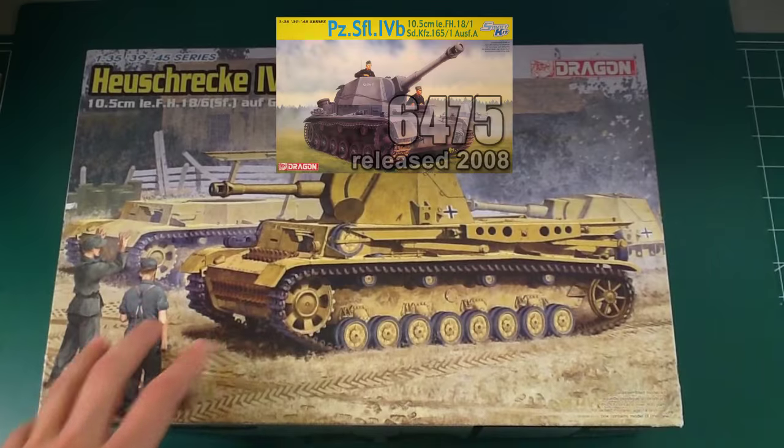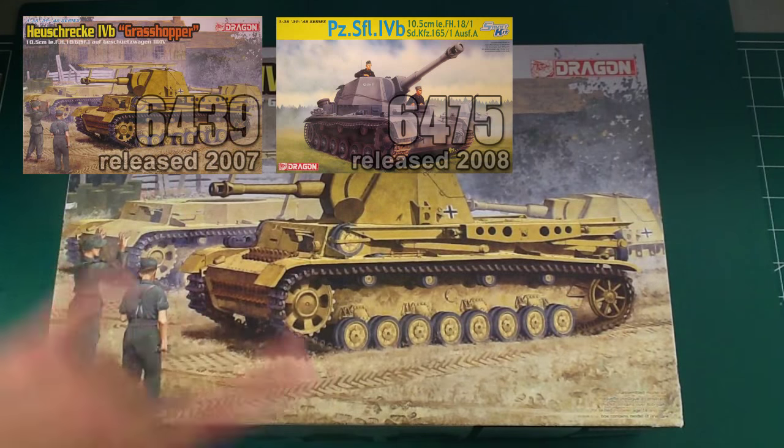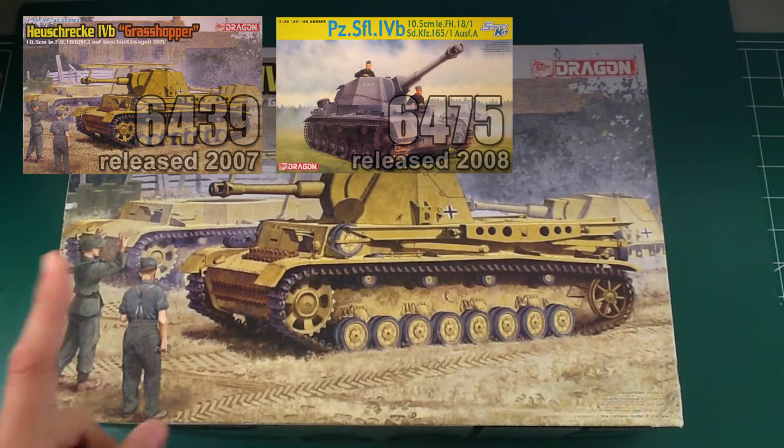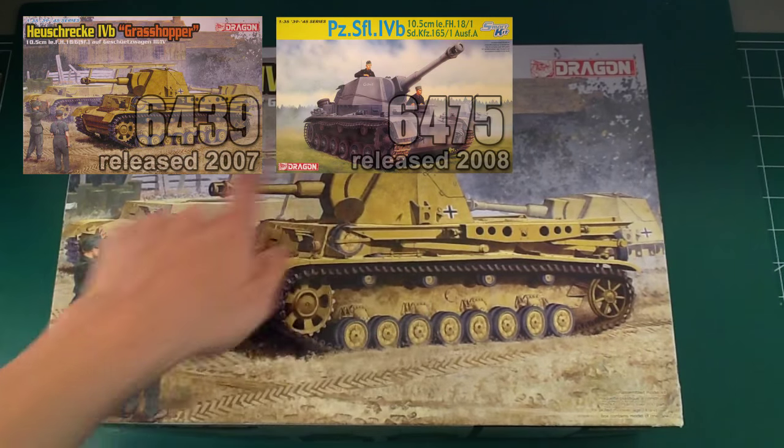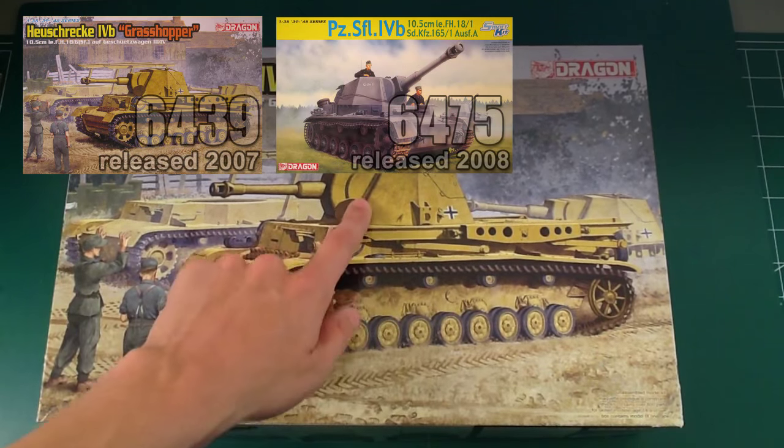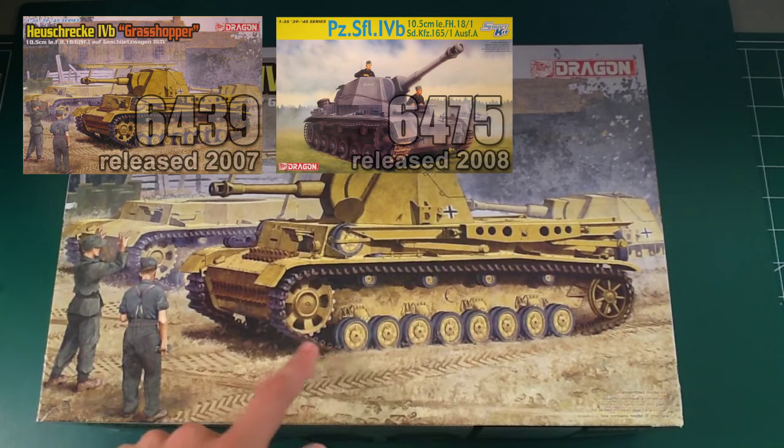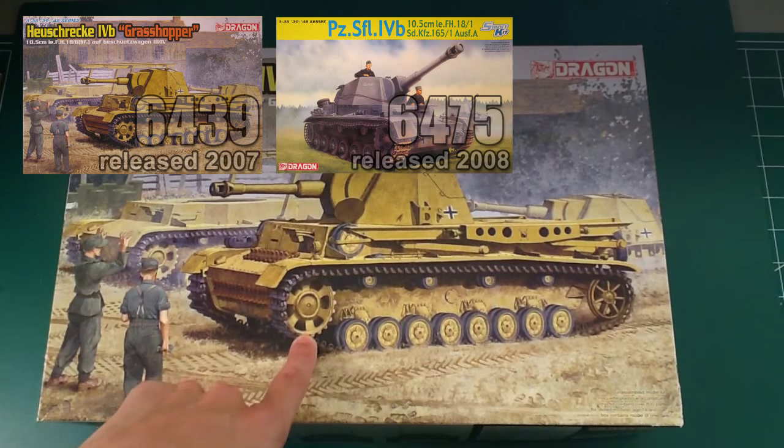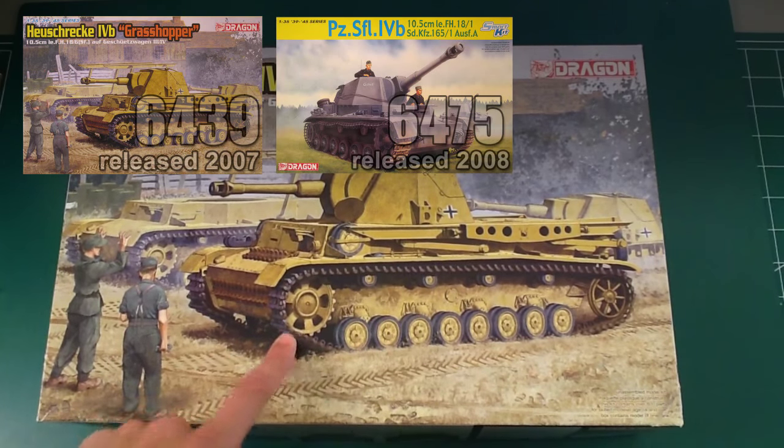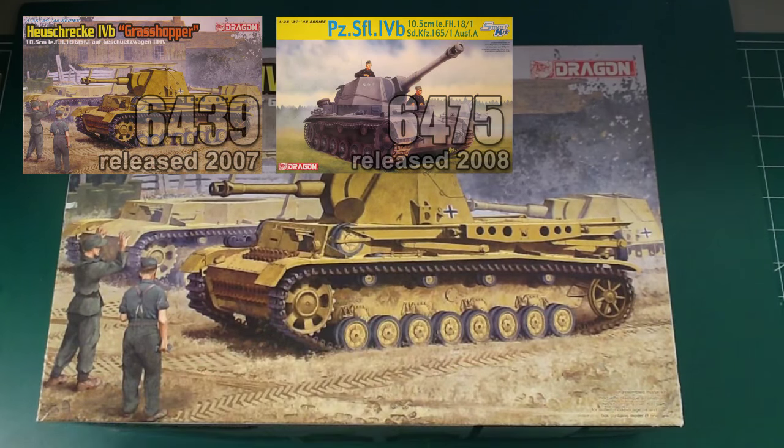So yeah, there is this one, which is kit number 6439, which came out in 2007. You can call it an initial tooling because I think the majority of hull and the turret will be, but it's going to have your standard Panzer IV smart kit suspension and stuff, or at least by the look of this drive sprocket, the Panzer III IV, so the Nashorn stuff.